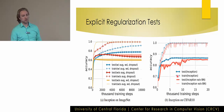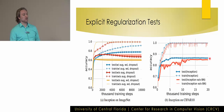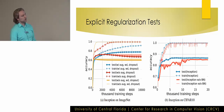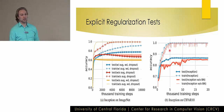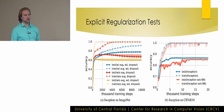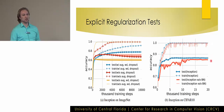Looking at batch normalization — with and without — at test time the results are very similar. Training without batch normalization tends to be much noisier; you see a much smoother training curve with batch normalization. But it really doesn't help much in terms of generalization performance.